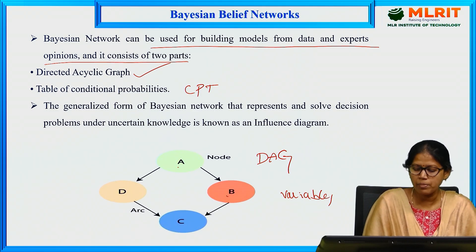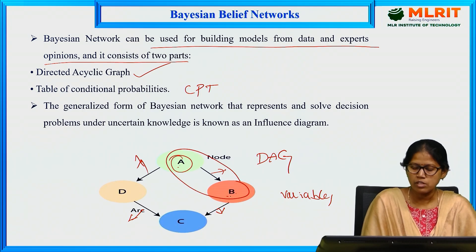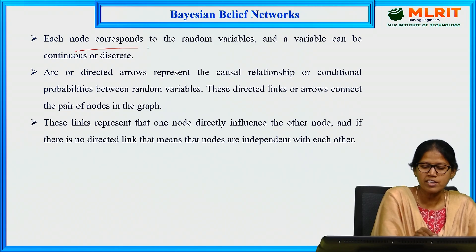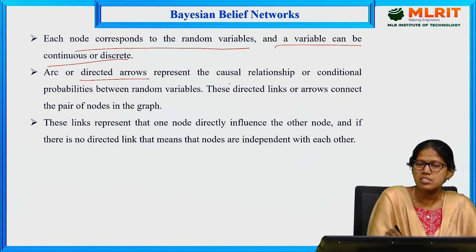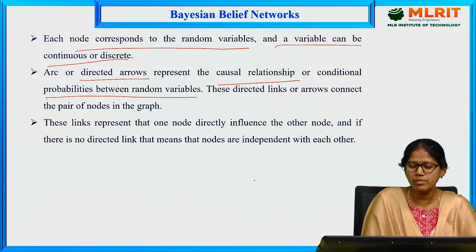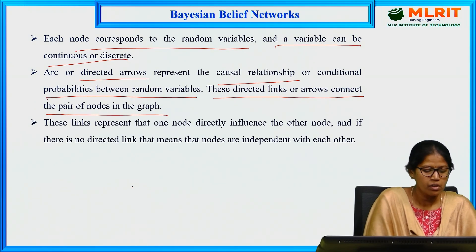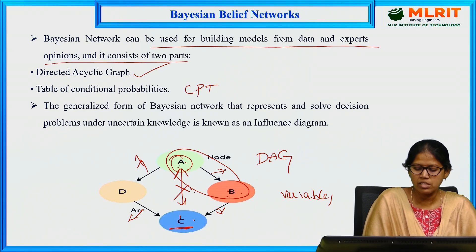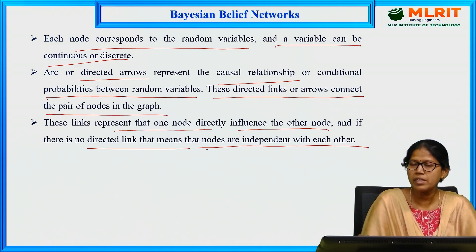If you observe A and B, A is the parent of B and the arcs represent dependencies — meaning there is a relationship. A is the parent of B, and C is independent of A; there is no relation from A to C. Each node corresponds to a random variable, which can be continuous or discrete. An arc or directed arrow represents a causal relationship or conditional probability between random variables. There is no directed link means those nodes are independent of each other.